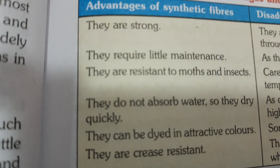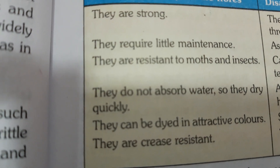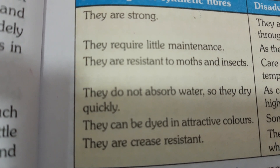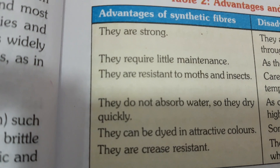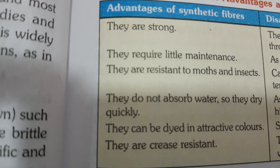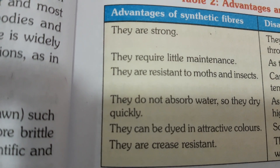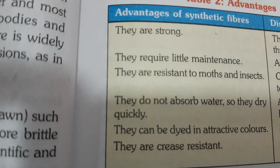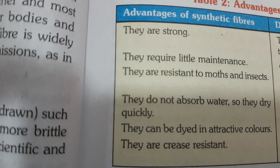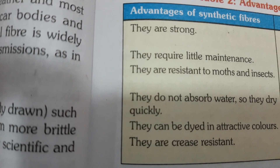What are the advantages of synthetic fiber over natural fiber? They are very strong and durable — they last long. They require very little maintenance. They are resistant to moth and insects; the moth and insects will not cut these synthetic fibers. They do not absorb water, or rather they absorb very less water, so they dry very quickly as compared to natural fiber. They absorb less water because they have very less pore size. They can be easily dyed into different attractive colors. They are crease resistant, meaning they will not get crumpled while washing and wearing them.